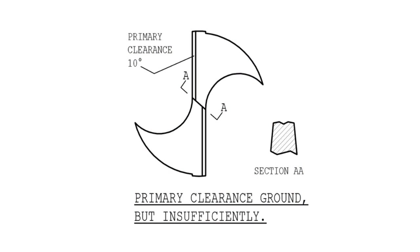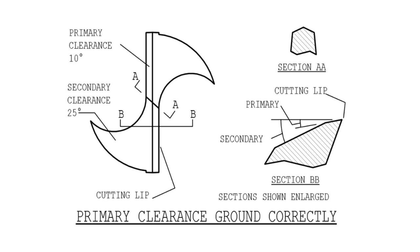The next stage is to grind the primary clearance, but this is much more critical than one may expect. The slide shows that with primary clearance being narrow, a large proportion of the forked chisel still exists. What is being aimed at, therefore, is for the two primary clearances to coincide, as the slide now shows.